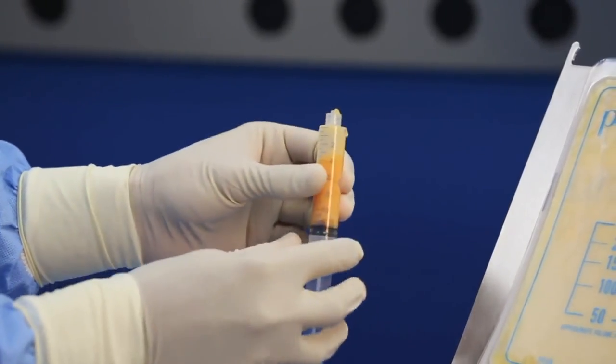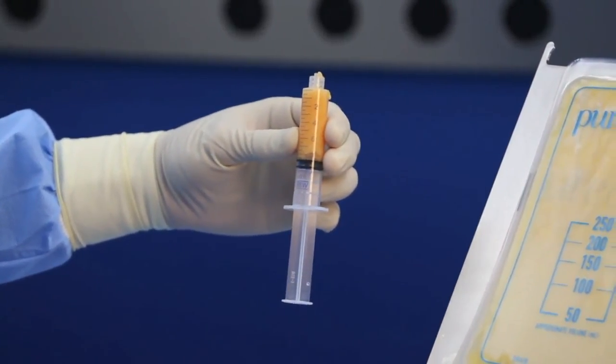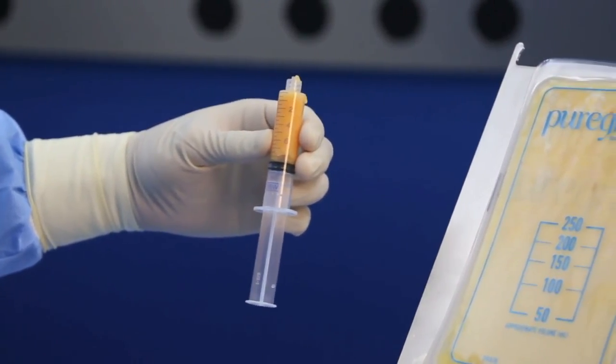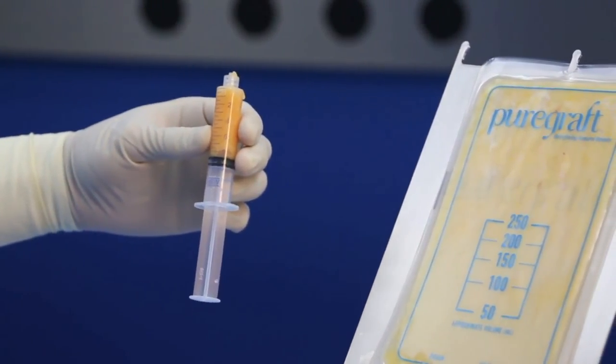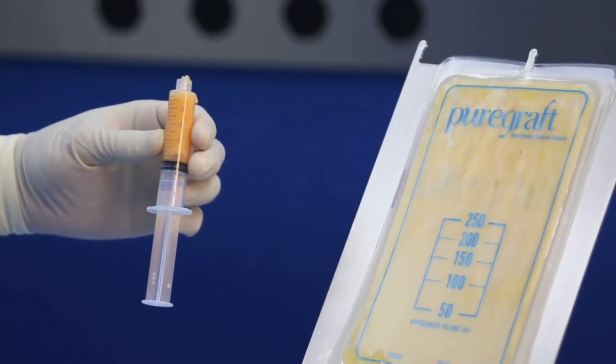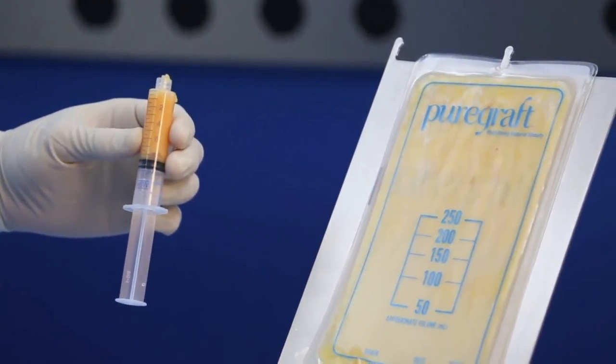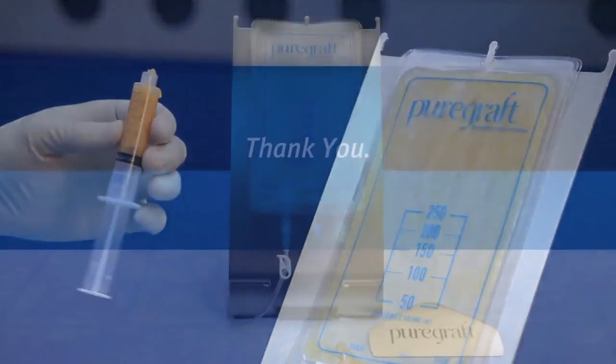As expected, you will notice that the final graft volume is approximately half that of the starting volume. This volume change comes from the ability of PureGraft to remove excess fluid, free lipids, blood cells, non-viable tissue fragments and debris, retaining healthy, viable adipose tissue within a closed system and providing a purified graft to deliver to the patient.